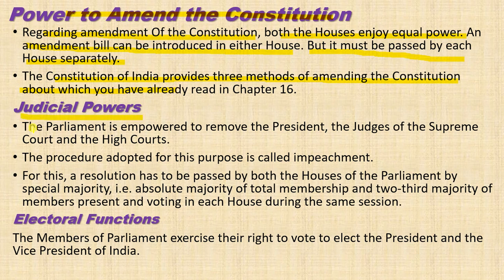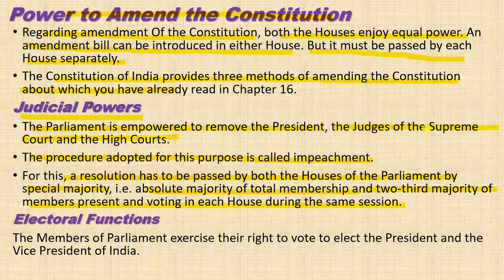Regarding judicial powers: the Parliament is empowered to remove the President, the judges of the Supreme Court, and the High Courts, but it is not a simple procedure. The procedure adopted for this purpose is called impeachment. A resolution has to be passed by both houses of Parliament by special majority — that is, absolute majority of the total membership and two-thirds majority of the members present and voting in each house during the same session.